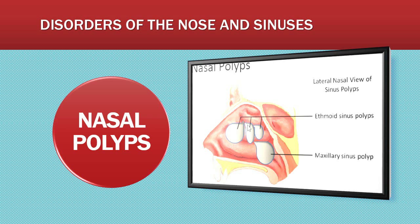If polyps become too large or start obstructing the airway, they need to be addressed. Treatment for polyps is going to be steroids or surgical removal. A polypectomy could be done.